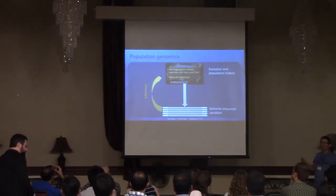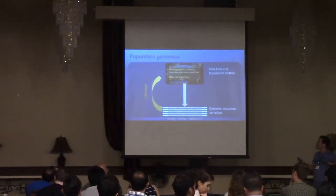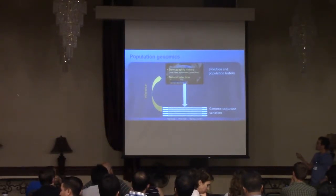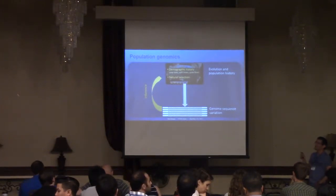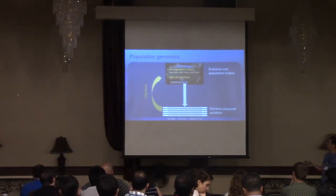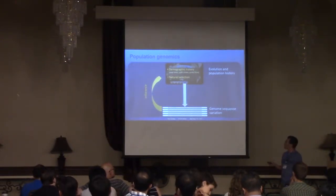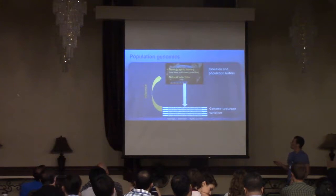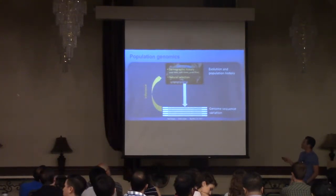The two main things we want to learn are: one, the demographic history — how populations spread and evolved, their sizes, the times at which they split, and gene flow between populations. The other is how natural selection affects variation, which allows us to use genome sequence variation signals to understand the function of different genomic regions.